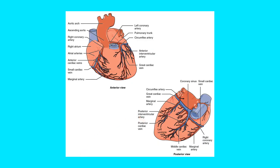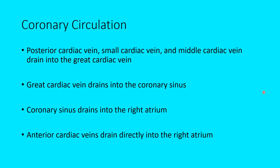Looking at the posterior view of the heart, the circumflex artery wraps around from the left side. The right coronary artery goes around the other way, and the marginal arteries branch from it. The posterior cardiac vein, small cardiac vein, and middle cardiac vein all drain into what's known as the great cardiac vein, which then drains into the coronary sinus, which drains into the right atrium.